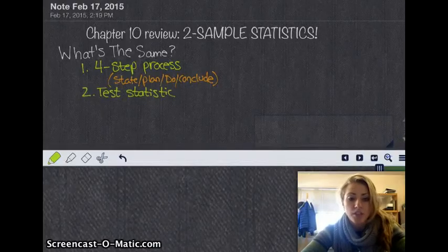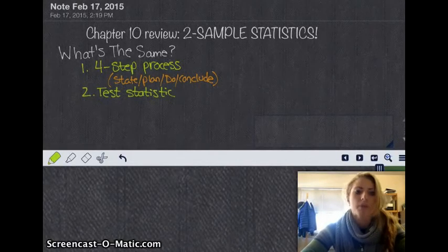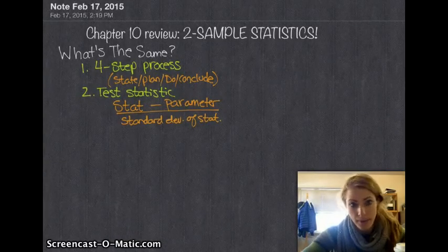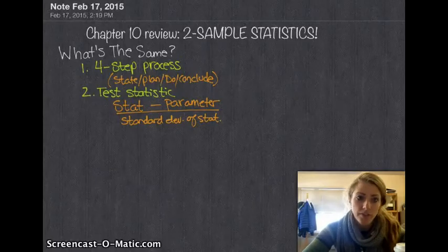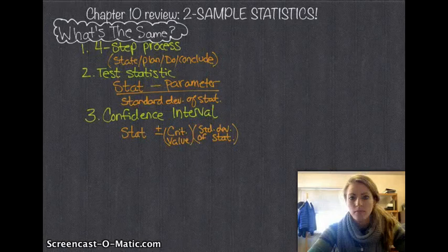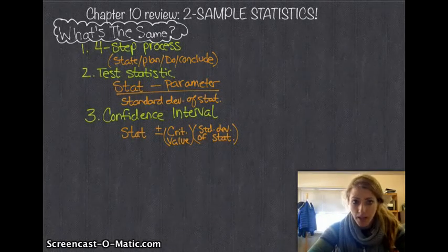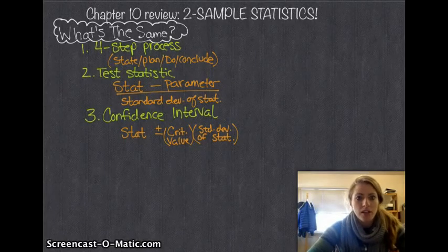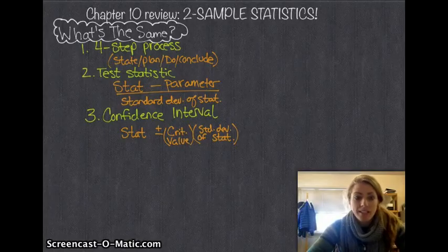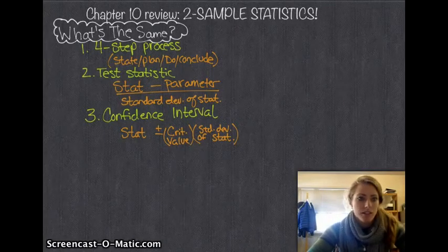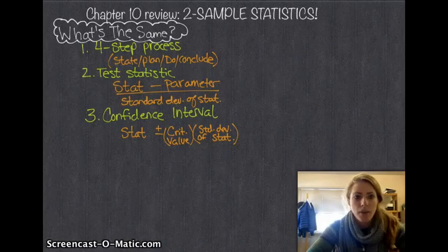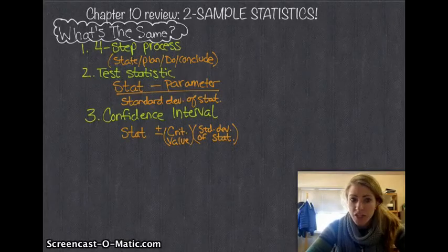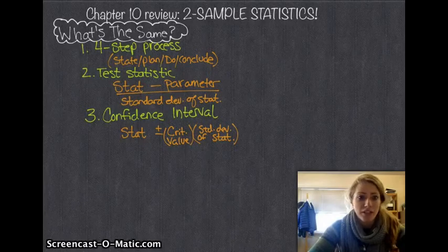The other things that are the same are the general formula for the test statistic. So I'll write all of these things down for you. So far what's the same? Four-step process: state, plan, do, conclude. Two is your test statistic, which is always your statistic minus your parameter all over the standard deviation of the statistic. Your general confidence interval is exactly the same, which is your statistic plus or minus your critical value times the standard deviation of the statistic. So overall, that's the same thing from chapter 8, chapter 9, and chapter 10. That's the overall big picture.